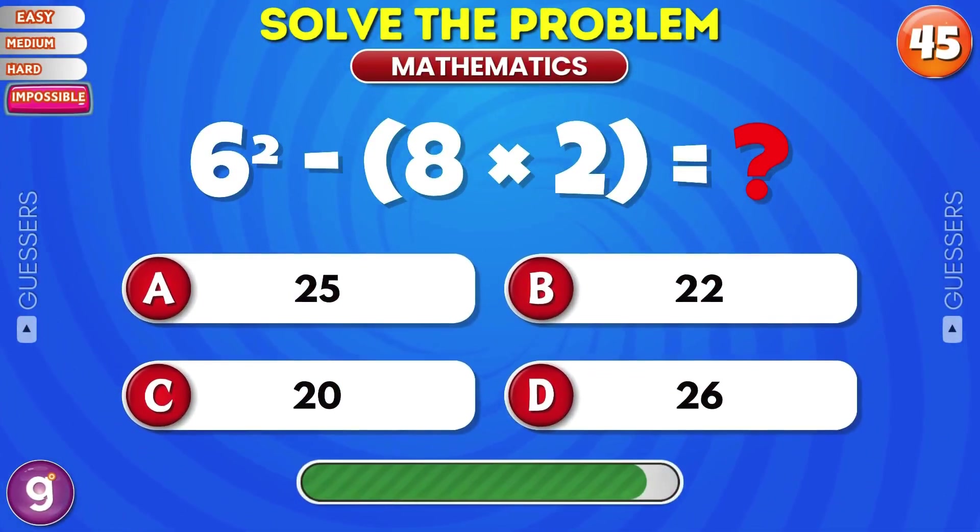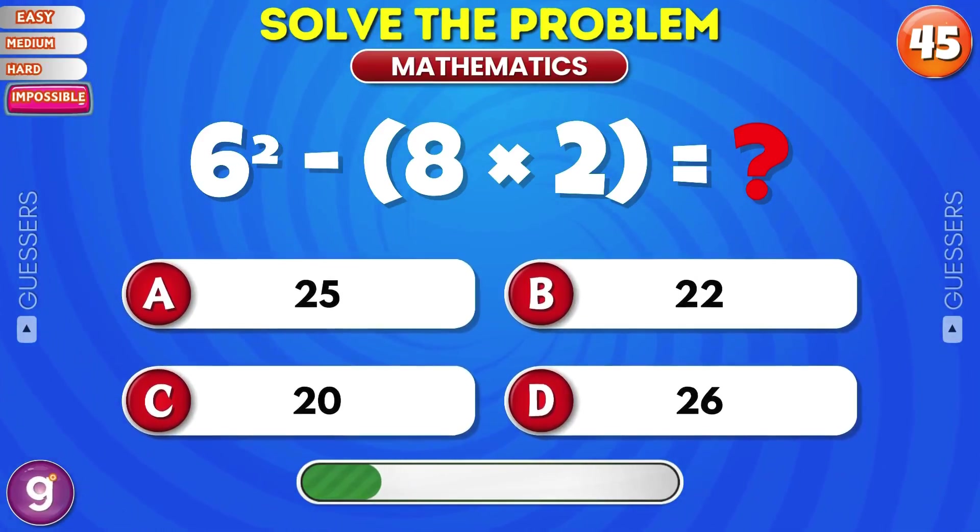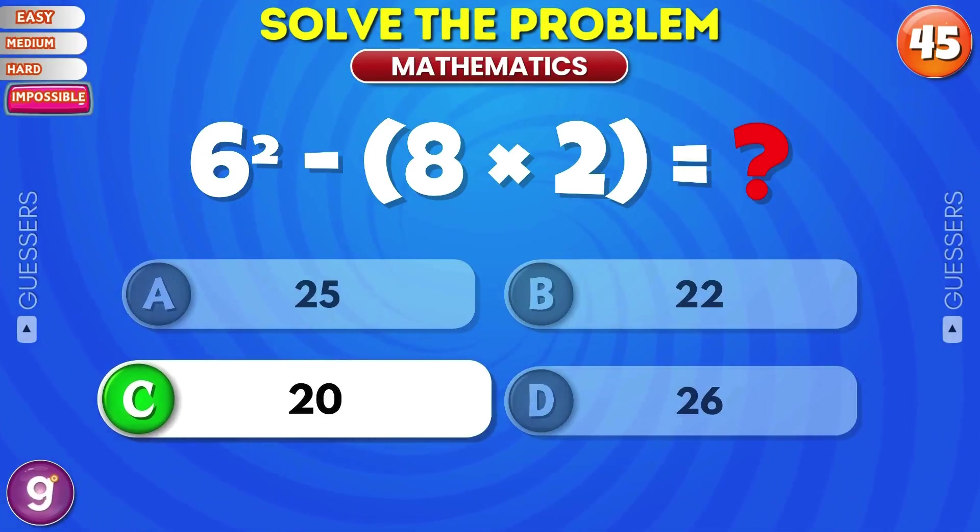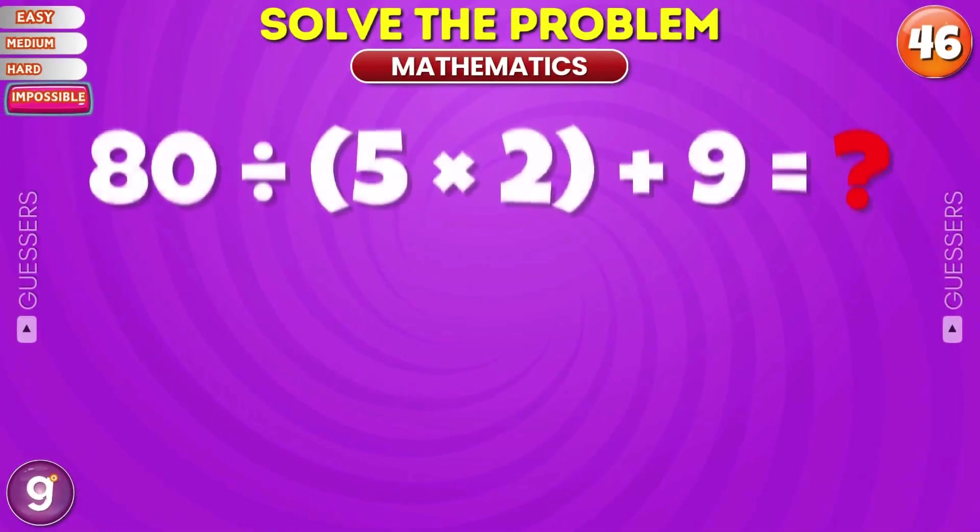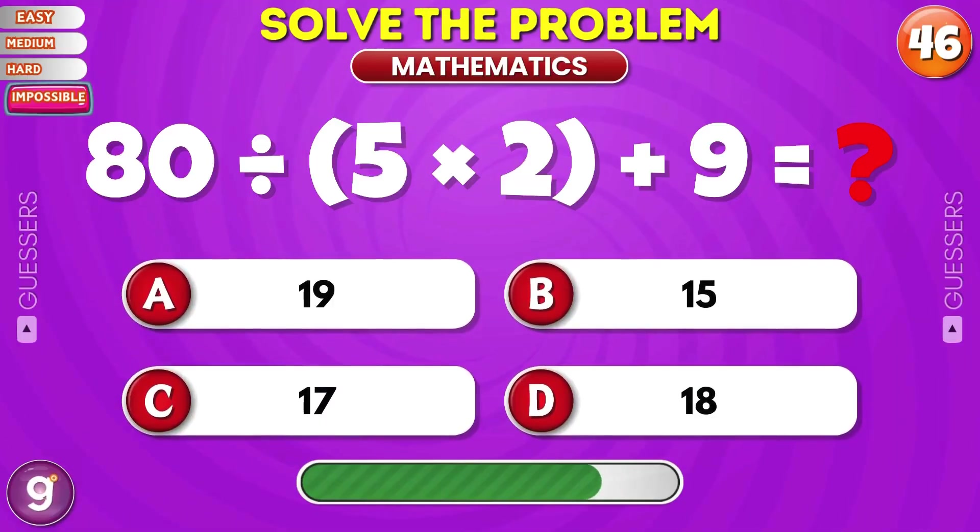Solve this equation. 20. 80 divided by 5 times 2 plus 9.